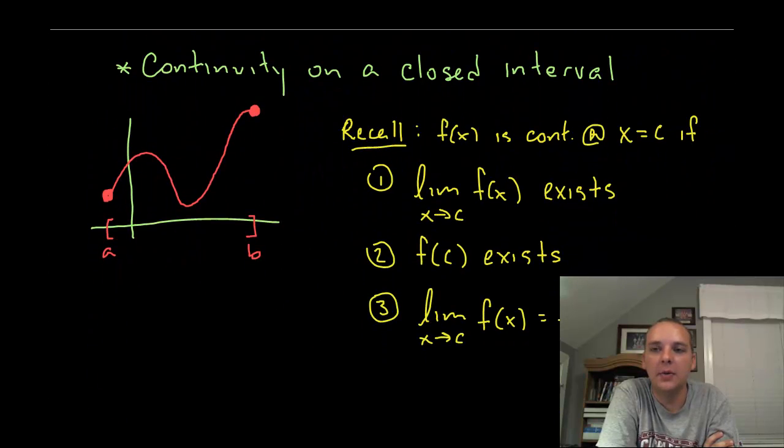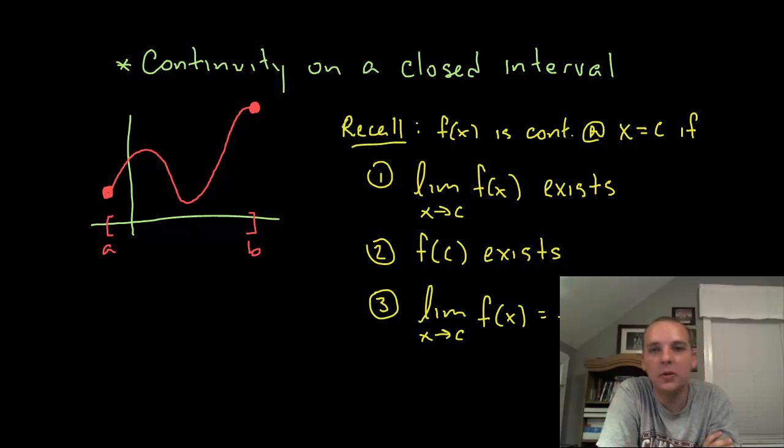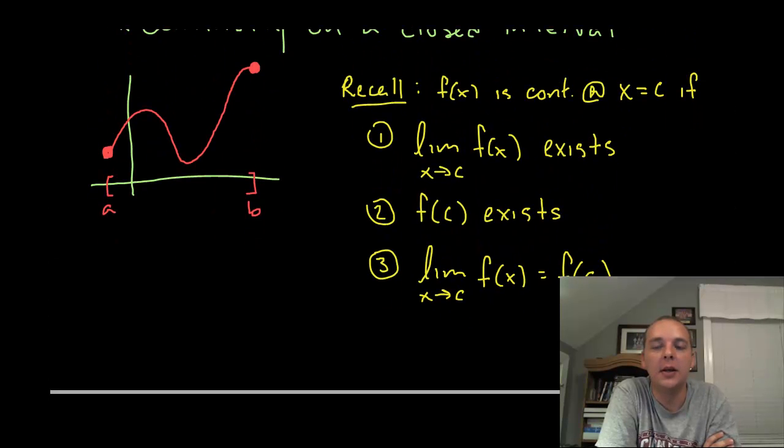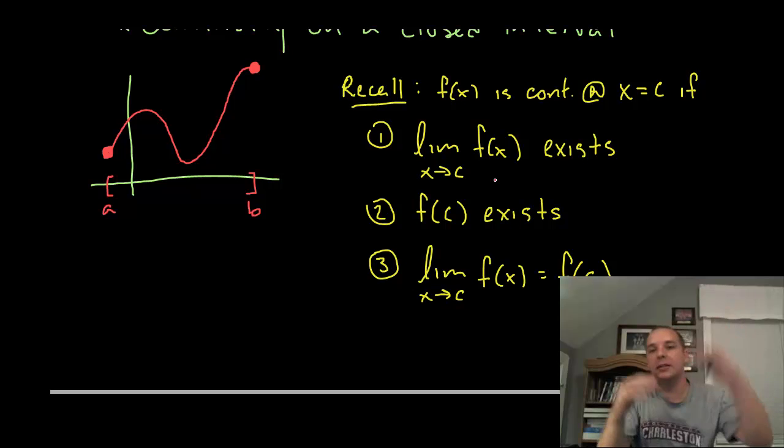Alright the last thing I want to wrap up with in this video is just a quick little discussion of how this relates to continuity in a particular situation. When you're talking about continuity on a closed interval, things get a little hairy definition-wise. Let's recall, what does it mean for a function to be continuous at a point? Well there were three things. We say a function is continuous at a certain point if the limit exists there because if the limit doesn't exist then it's obviously broken.